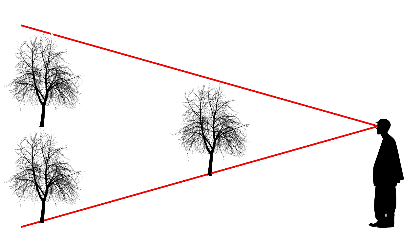Photogrammetry means using these principles of trigonometry to create a real-world construction of the scene. It works best when you have photographs or videos from two or more angles. Then, all you need to know is one real-world distance measurement to recreate the entire scene full size.